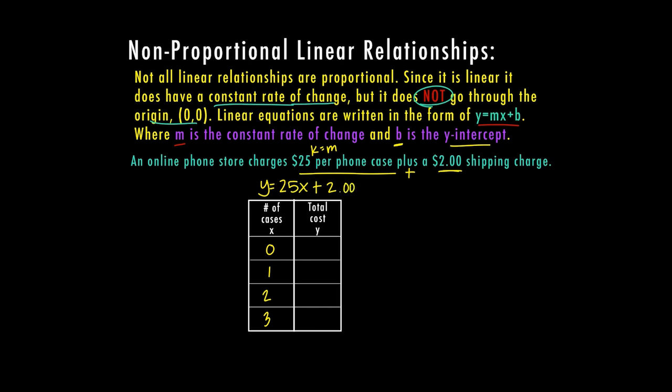That means at zero, when I'm on the site shopping, there's still going to be a $2 charge as soon as I put something in the cart. Technically, if we buy zero cases, we would still have to pay that shipping fee. One phone case would cost us the $25 plus the $2 shipping fee, so that would be $27.